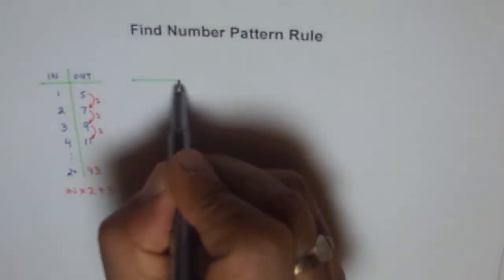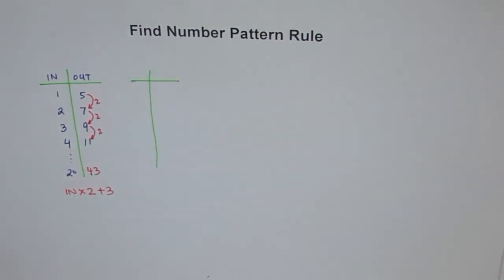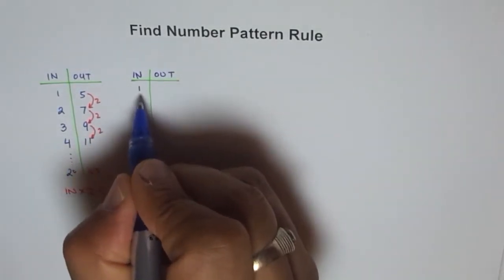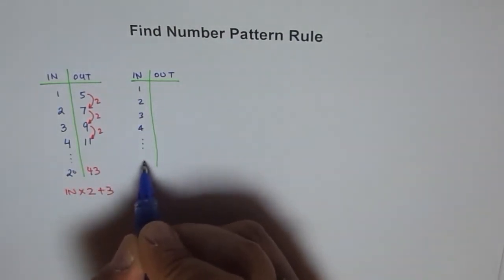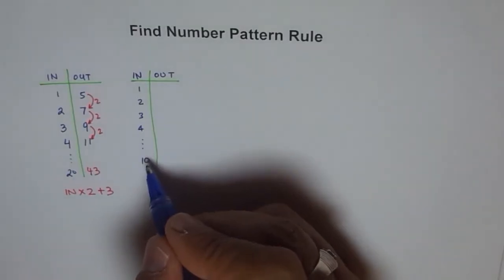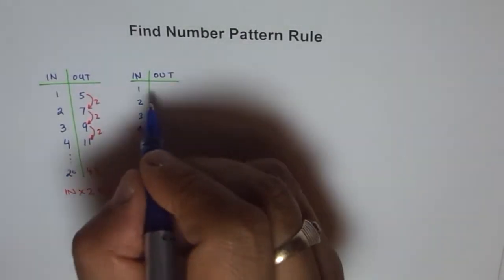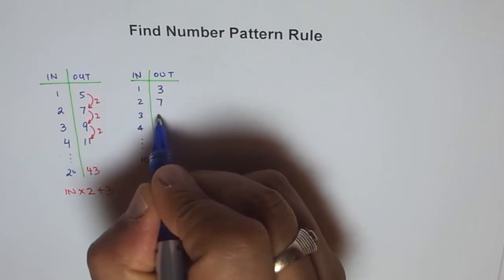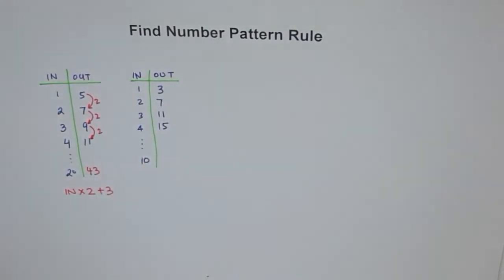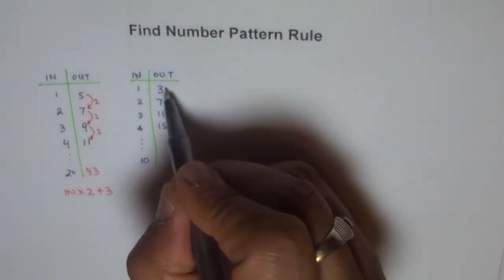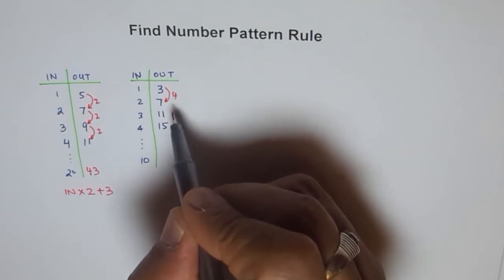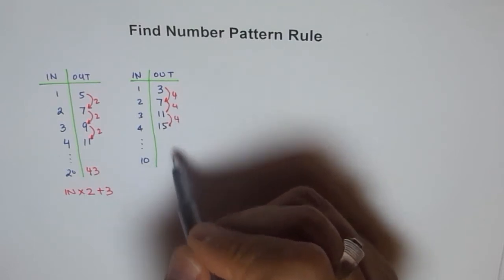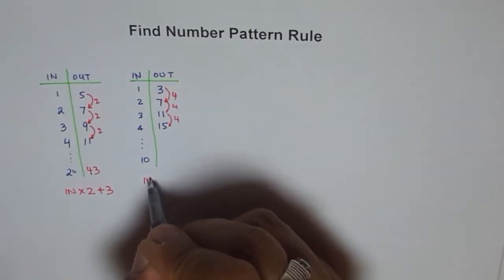Let's take more examples and see whether it works always. Again, let's have some input numbers: 1, 2, 3, 4, and then number 10. Let's start with output 3 and add 4 each time. So: 3, then 7, then 11, then 15. The difference between consecutive outputs is 4 each time — 7 minus 3 is 4, 11 minus 7 is 4. So our rule should involve input times 4.